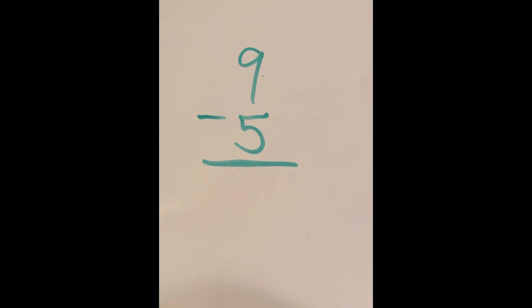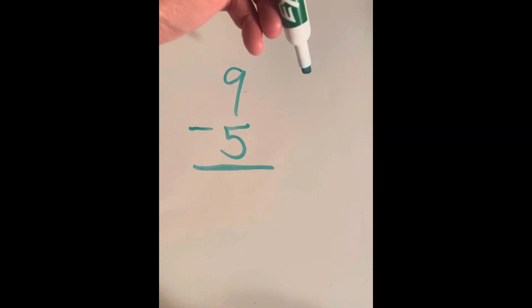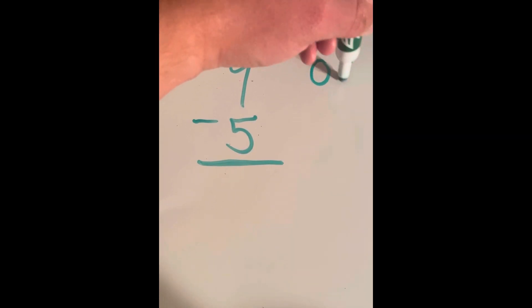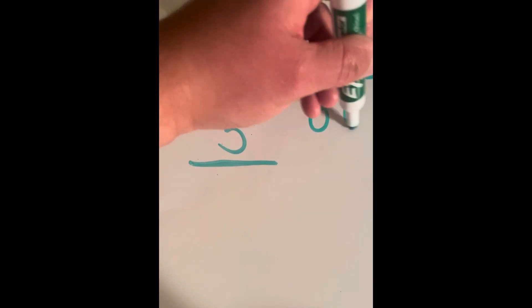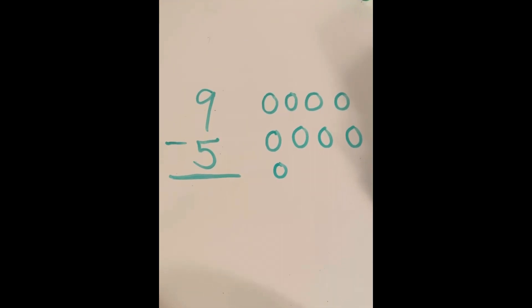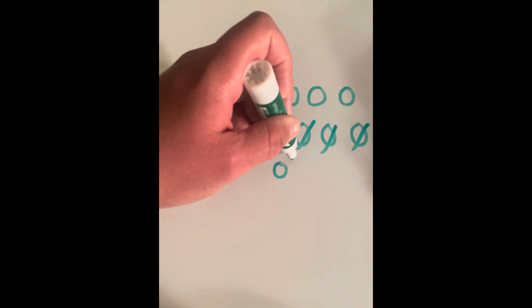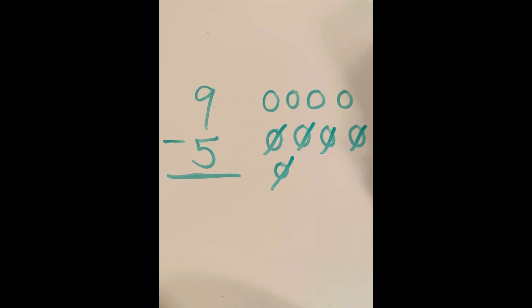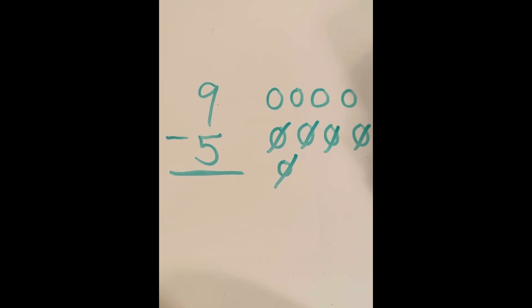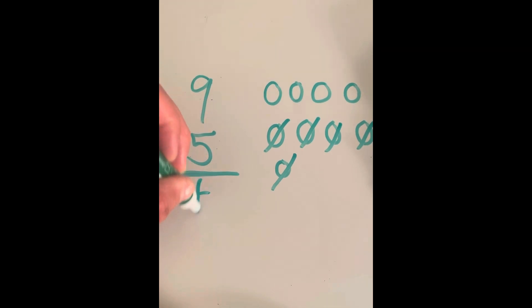Example number two: nine minus five. If you're not able to subtract these numbers in your head, you can draw nine total circles, cross out five of them, and count how many are left. I'm drawing nine circles — one, two, three, four, five, six, seven, eight, nine — and crossing out five: one, two, three, four, five. Counting circles not crossed out: one, two, three, four. Nine minus five equals four.